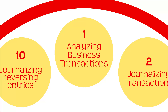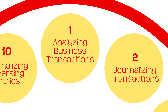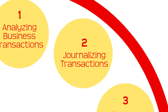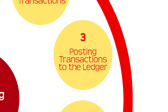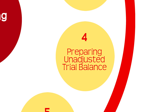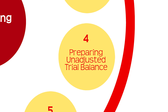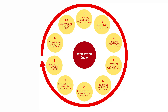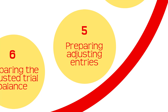The analysis and recording of transactions, double entry accounting, journal entries, posting, ledgers and the trial balance were all tackled in the previous topics. After these four steps were done, the next step in the accounting cycle is the preparation of the adjusting entries.